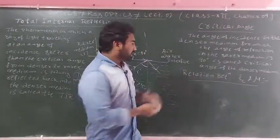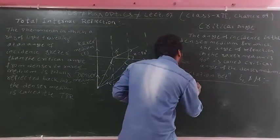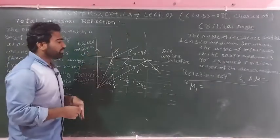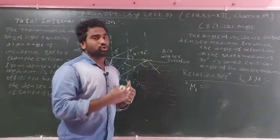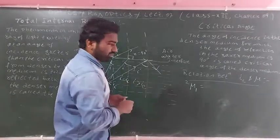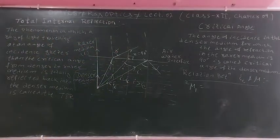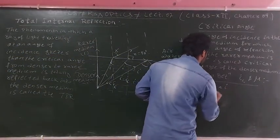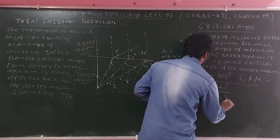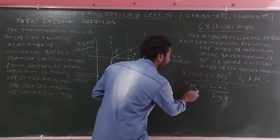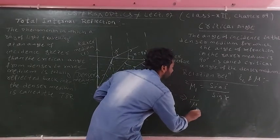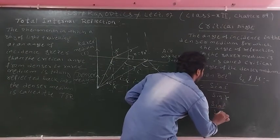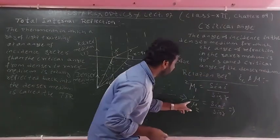Using Snell's law, the refractive index relationship is given by mu = sin r / sin i. Applying the principle of reversibility, mu12 equals sin i over sin r, where mu1 is the refractive index of the denser medium.